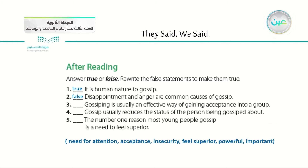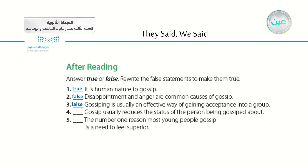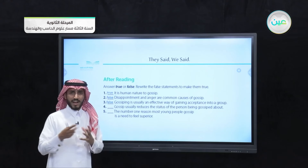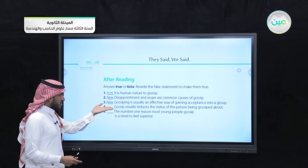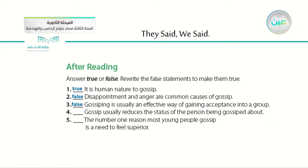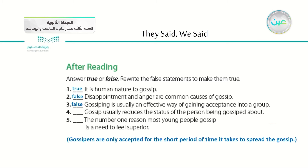For example, number two was false: disappointment and anger are common causes of gossip. The correct answer is: need for attention, acceptance, insecurity, feeling superior, powerful, and important are the common causes of gossip. Number three was also false: gossiping is usually an effective way of gaining acceptance into a group. Going back to the essay, we find the correct answer is that gossipers are only accepted for the short period of time it takes to spread the gossip — it's not permanent, only temporary.